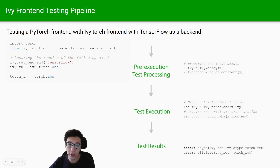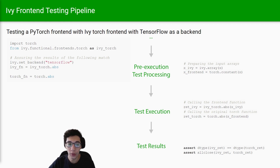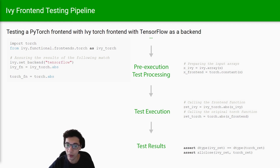To begin, let's use a simple example to explain how to test a torch frontend function. For simplicity, we're going to assume we are testing the abs function, which is short for absolute. This function takes in a parameter called input, which is basically an array.